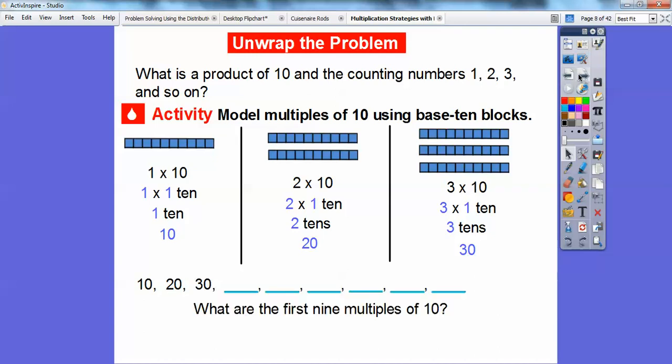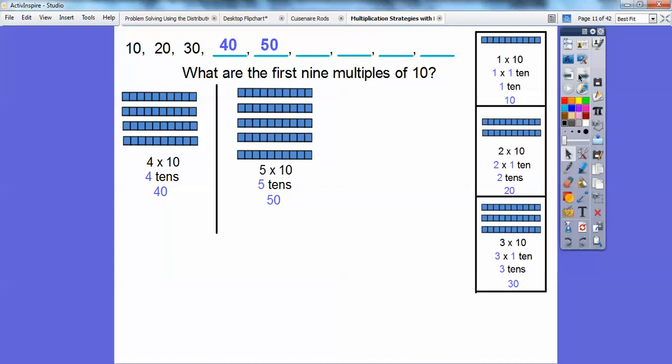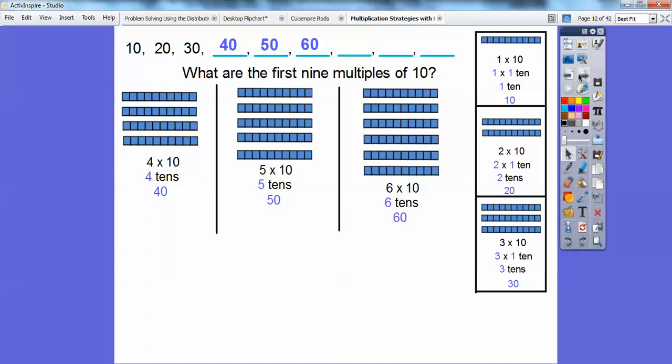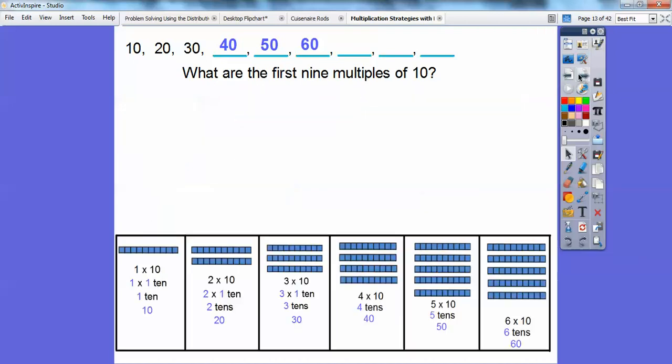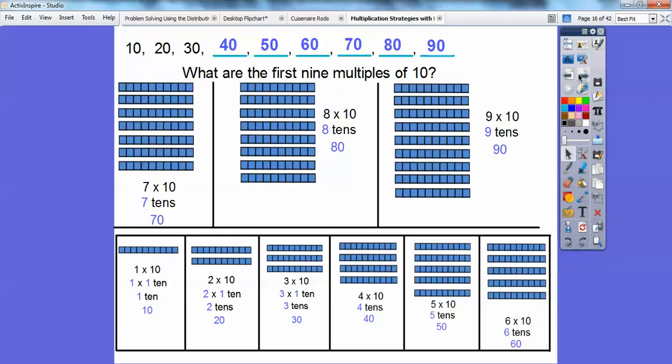So we're going to keep going, you guys, and we're going to do all the way for what are the first 9 multiples of 10. Let's get some room over here. There's the first 3 over there. So there's 4 tens or 40 right there. There's 5 tens or 50, 6 tens or 60. Let me rearrange that. So there's our 7 tens, there's our 8 tens, and there's our 9 tens right there.